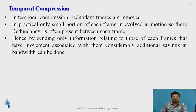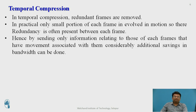In temporal compression, the redundant frames are removed. In practice, only a small portion of each frame is involved in motion, so there is redundancy present between each frame. Hence, by sending only the information relating to those frames that have movement associated with them, we save data bandwidth.